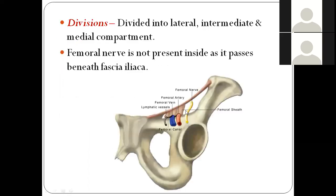We already know the femoral sheath has three compartments. This is the pubic symphysis and this is the anterior superior iliac spine, so this side is medial and this is lateral. The three subdivisions are medial, intermediate, and lateral. The gray color represents the lymphatic vessel in the medial compartment. Middle compartment contains femoral vein, lateral compartment contains femoral artery. The femoral nerve lies outside the femoral sheath.